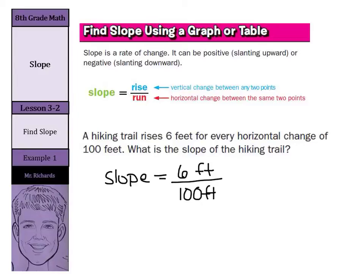Now slope is something that we can simplify. So if we divide by 2 on top and bottom here, we would get a slope of 3 over 50. The slope of the hiking trail is 3 50ths.